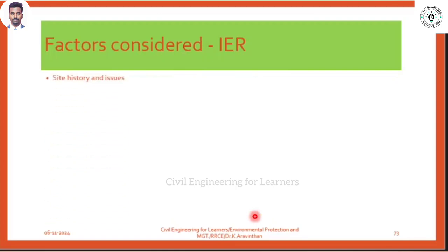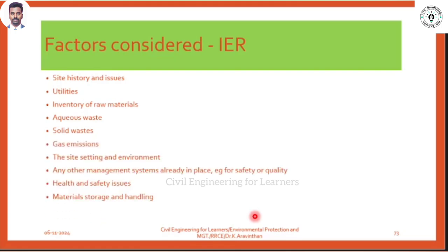Factors considered before doing a research: they will check the history of previous years, check the utilities, inventory of raw materials during manufacturing — it could be rubber, limestone, or silica. Aqueous waste means liquid waste — whatever waste liquids are there — has to be considered. Solid waste also. You have to take three elements: solid, liquid, and emissions (gas). Any incidents that happened for workers during the time period, storage and handling, noise and vibrations — all will be considered during IER.